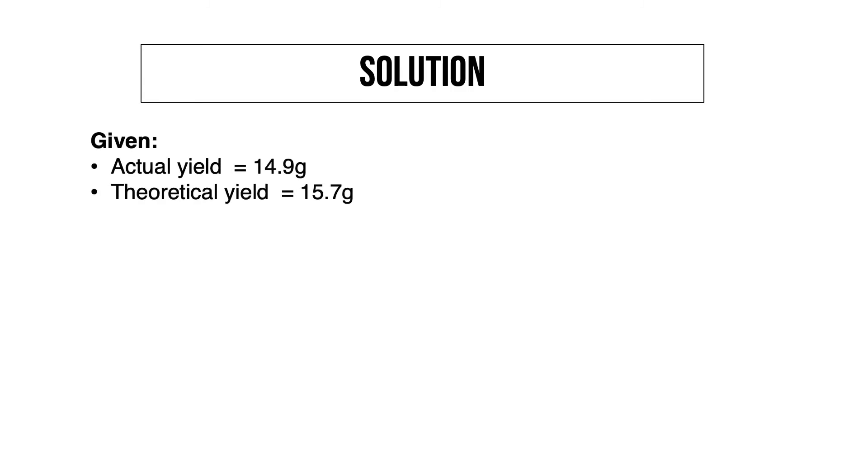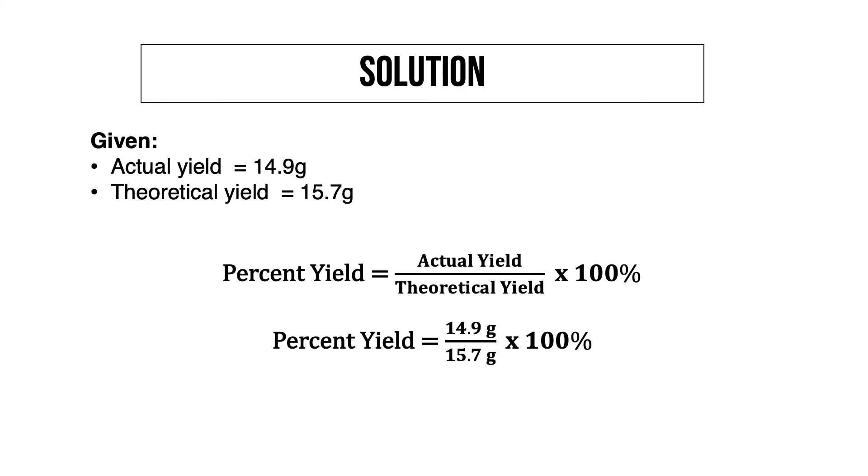Since the theoretical yield and actual yield are given, we can just substitute the variables in the formula with the appropriate values and compute for the percent yield, giving us this.